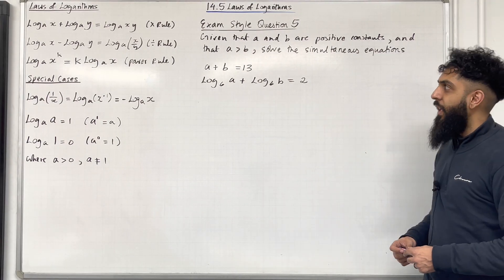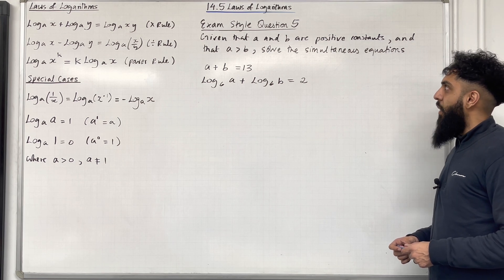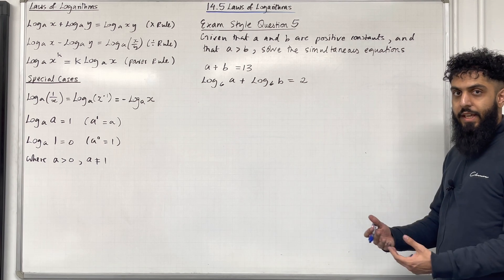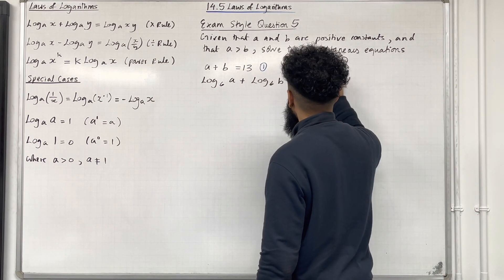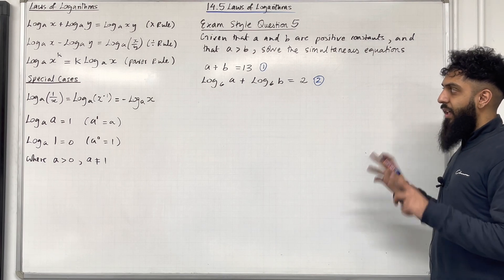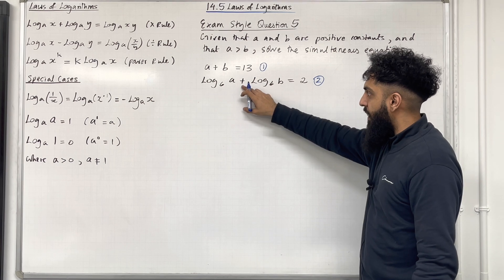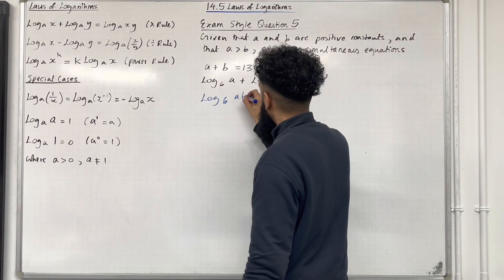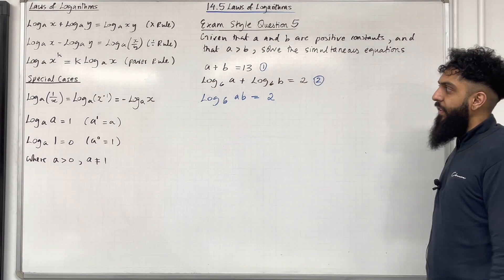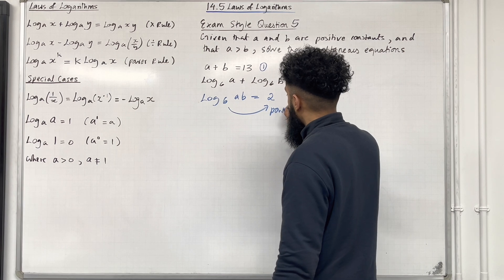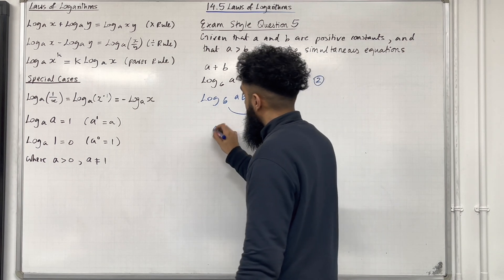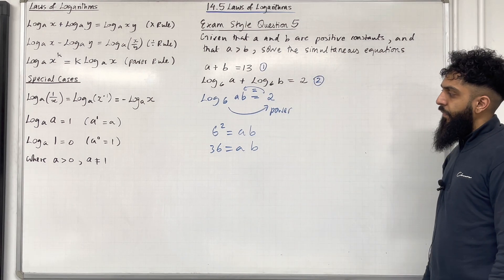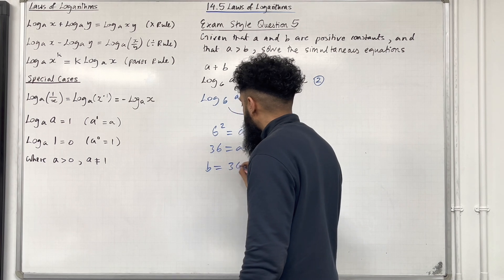Let's have a look at exam style question 5. Given that A and B are positive constants and A is greater than B, solve the simultaneous equations: A plus B equal 13, and log base 6 of A plus log base 6 of B equal 2. The first step is to label the two equations — equation 1 and equation 2. Taking equation 2, I can combine the two logarithms: the same base and we're adding, so using the multiplication rule we have log base 6 of AB equal 2. Rewriting using powers: 6 to the power 2 must equal AB, so 36 equal AB.